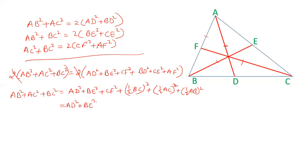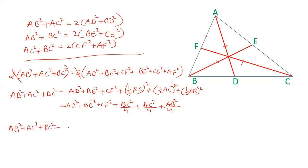Substituting these, the right-hand side terms become BC²/4, AC²/4, and AB²/4. Taking these to the left-hand side: AB² + AC² + BC² minus BC²/4 minus AC²/4 minus AB²/4 equals the sum of squares of medians AD² + BE² + CF².